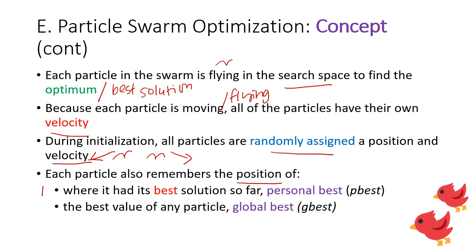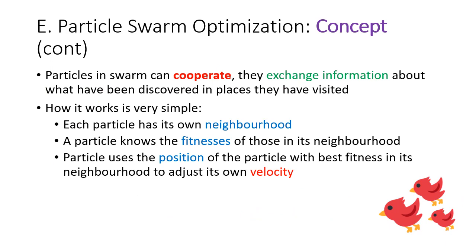Each particle remembers two positions. The first is the location where it found the best solution so far, called personal best or p-best. The second is the best value found by any particle in the swarm, called global best or g-best. Particles in the swarm cooperate by communicating information about what has been discovered in places they have visited.